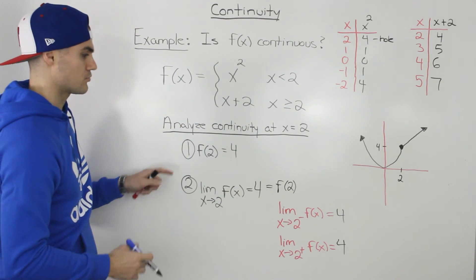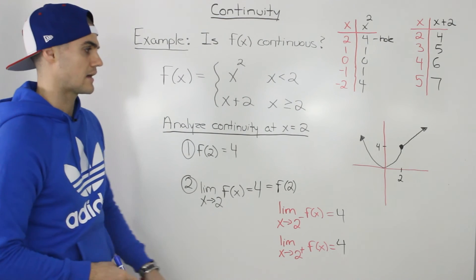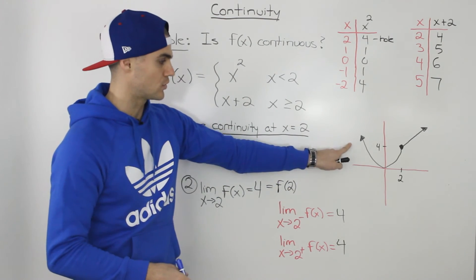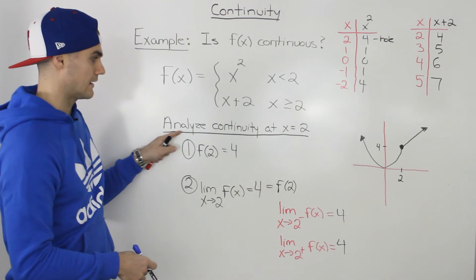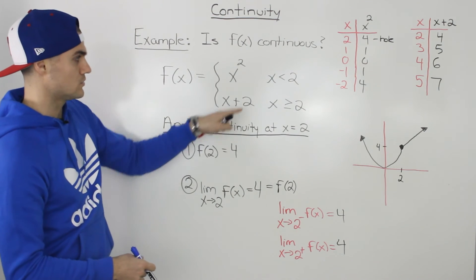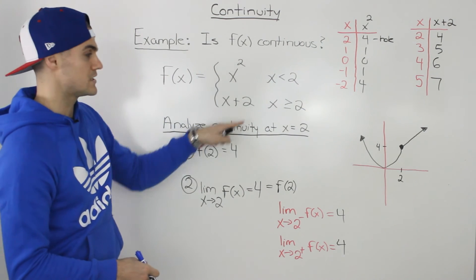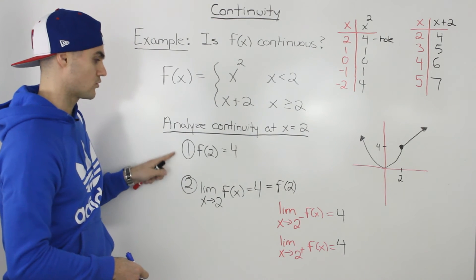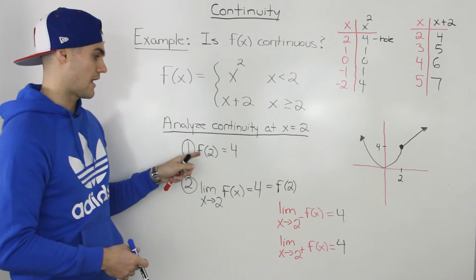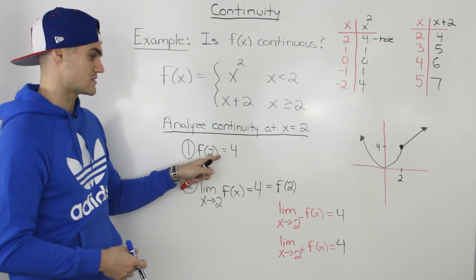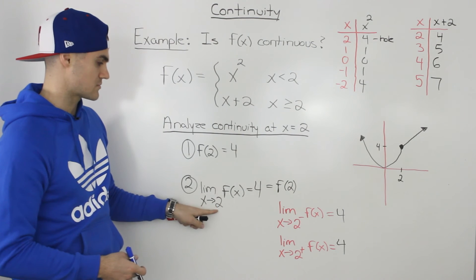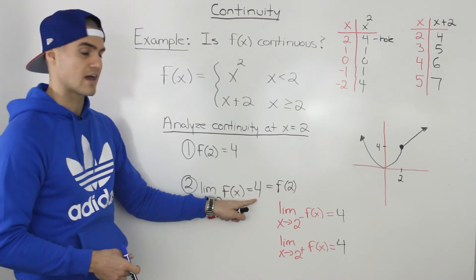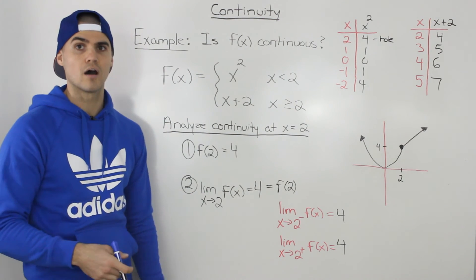So we can be confident that this function is continuous. We showed it through a graph, and we proved both conditions at the meeting point x equals 2: f of 2 is defined and equals 4, and the limit as x approaches 2 of f of x equals f of 2, which is 4.